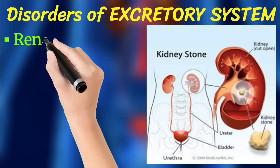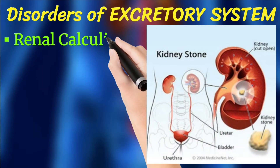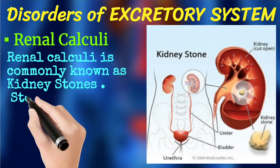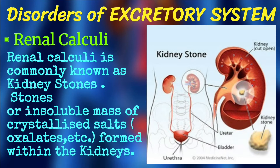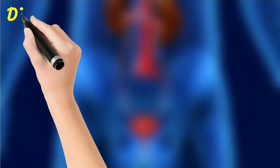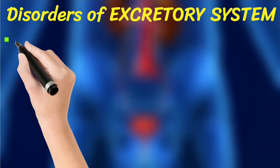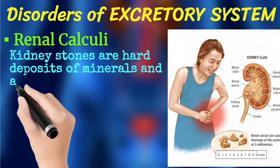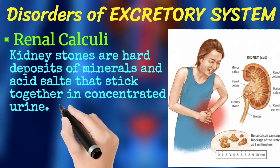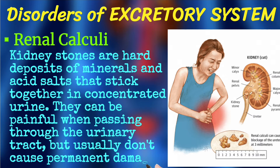The next disorder is renal calculi, also commonly known as kidney stones. Insoluble masses of crystallized salts like oxalates formed within the kidneys lead to renal calculi. Kidney stones are hard deposits of minerals and acid salts that stick together in concentrated urine. They can be painful when passing through the urinary tract but usually don't cause permanent damage to the excretory system.